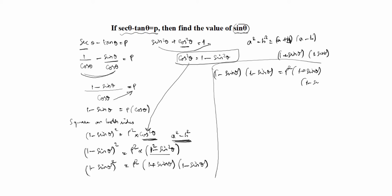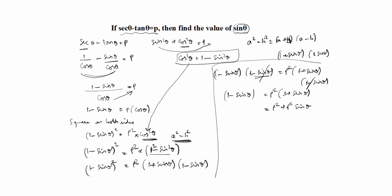So we now have 1 minus sine theta into 1 minus sine theta equal to p squared times 1 plus sine theta into 1 minus sine theta. The factor 1 minus sine theta is common on both sides, so we cancel it. We get: 1 minus sine theta equal to p squared times 1 plus sine theta. Expanding: p squared plus p squared sine theta equal to 1 minus sine theta.